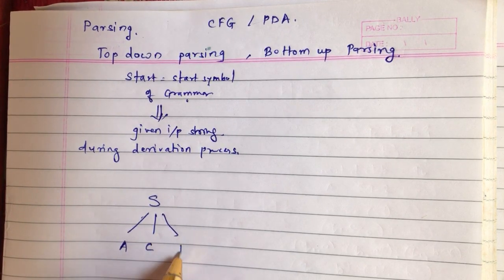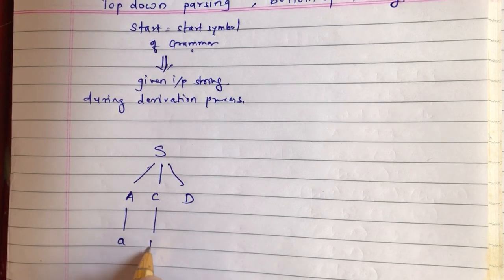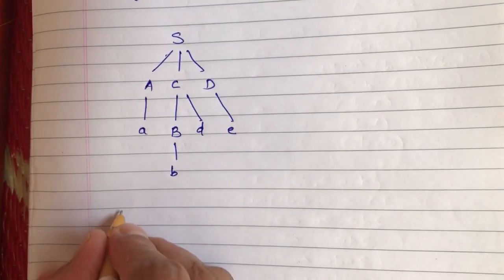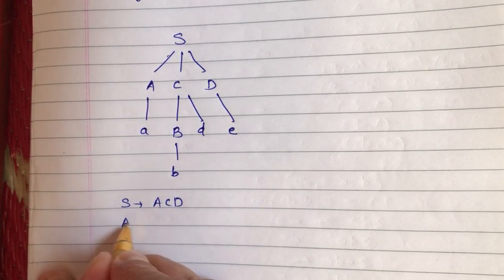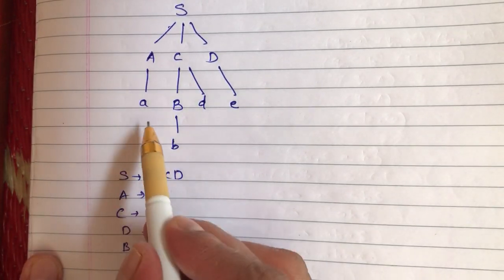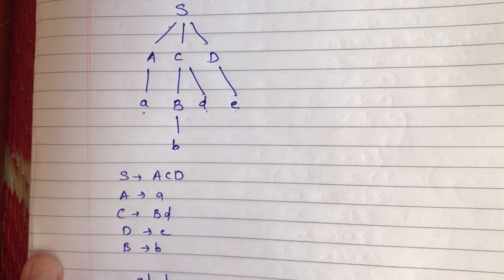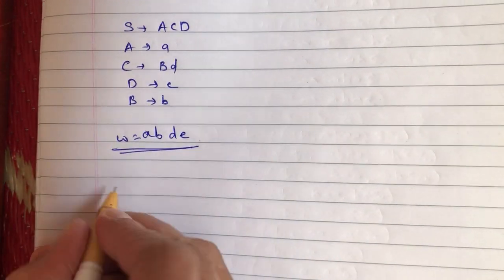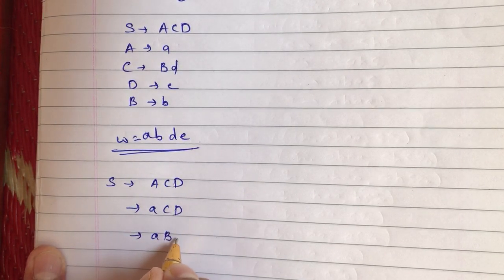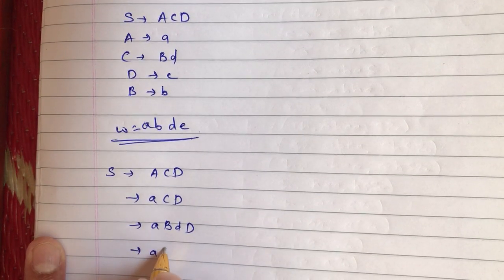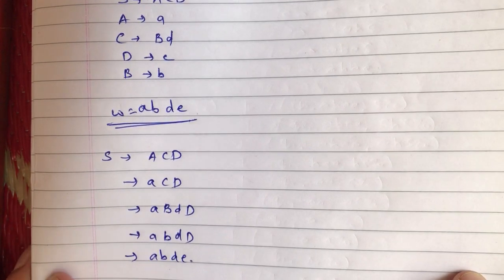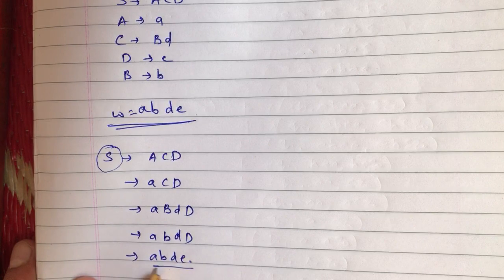For example, consider the grammar: S → ACD, A → a, C → BD, D → e, and B → b. The input string is w = abde. Starting from the start symbol S, we derive: S → ACD → aCD → aBDD → abDD → abde. So we start from the starting symbol of the grammar and reach the given input string.